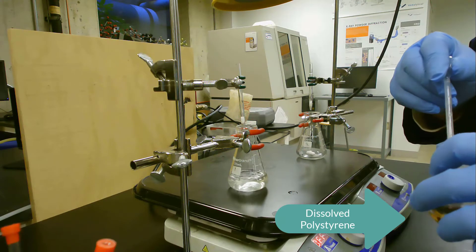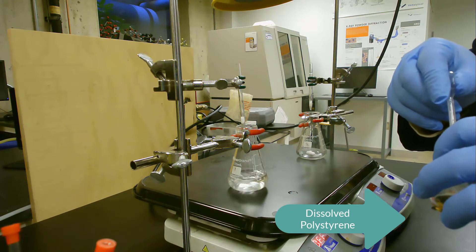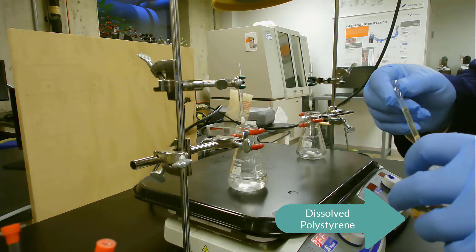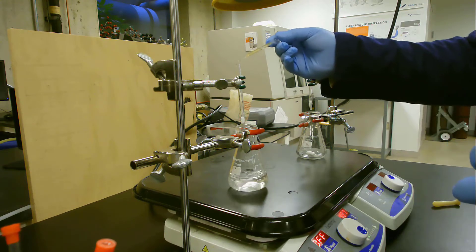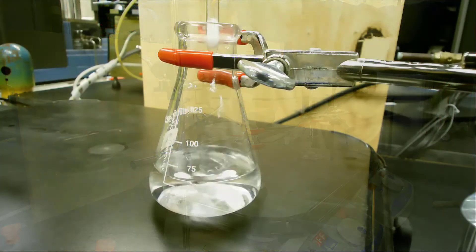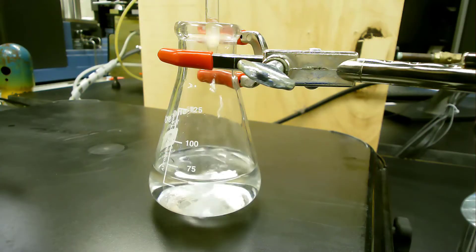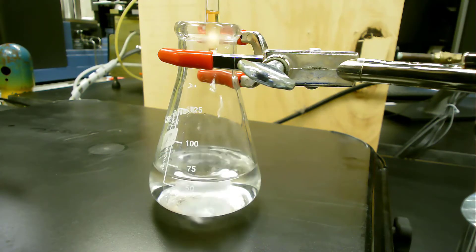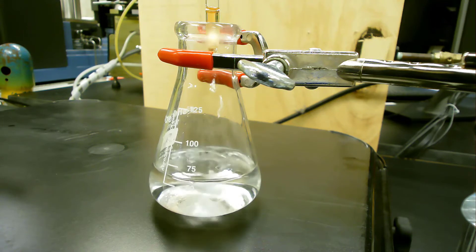We'll then slowly pipette our polystyrene mixture into the glass filter. We'll add this dropwise, you can see that we immediately form a precipitate.